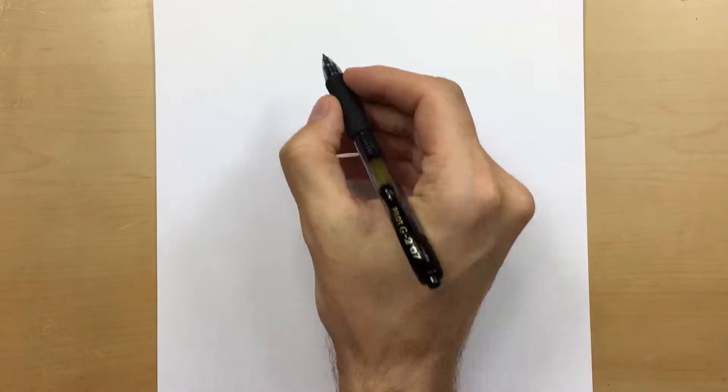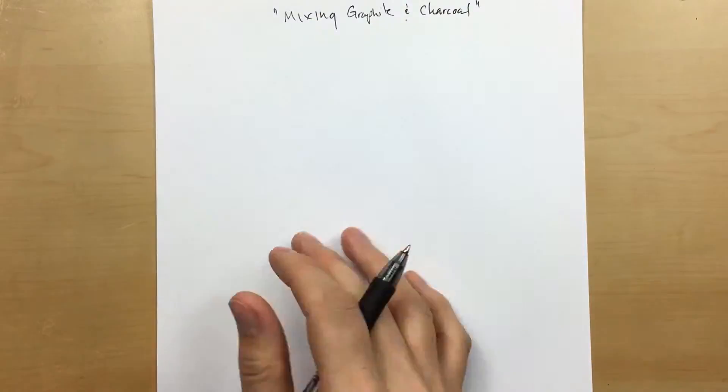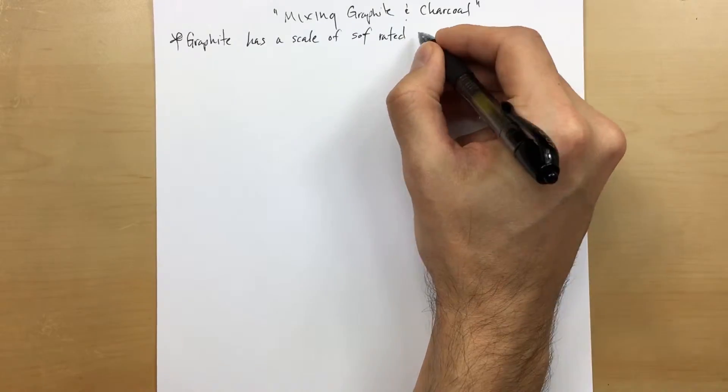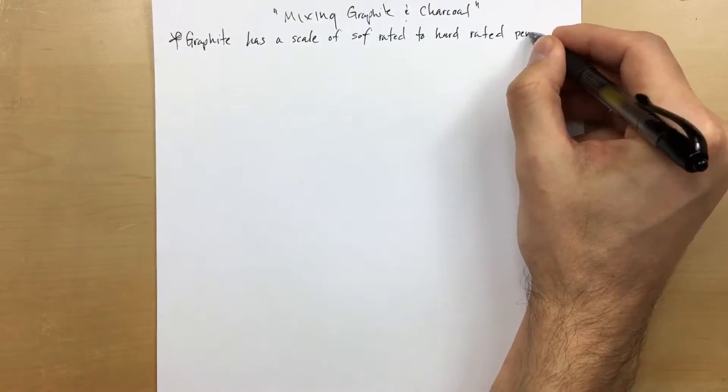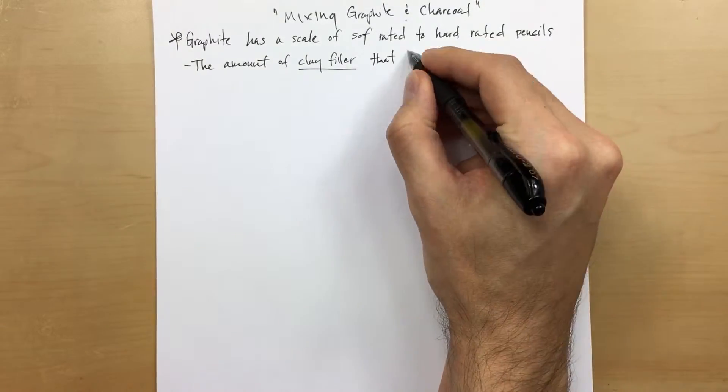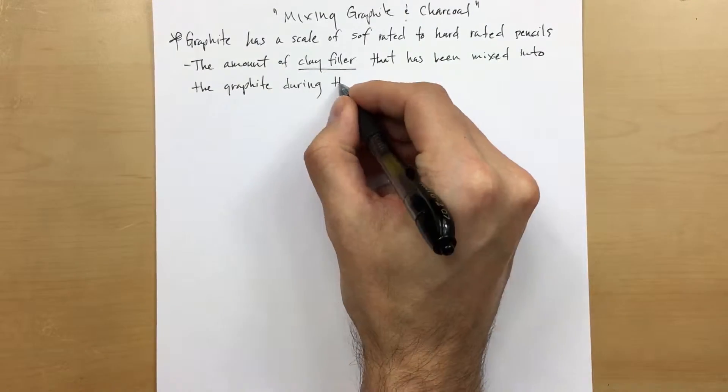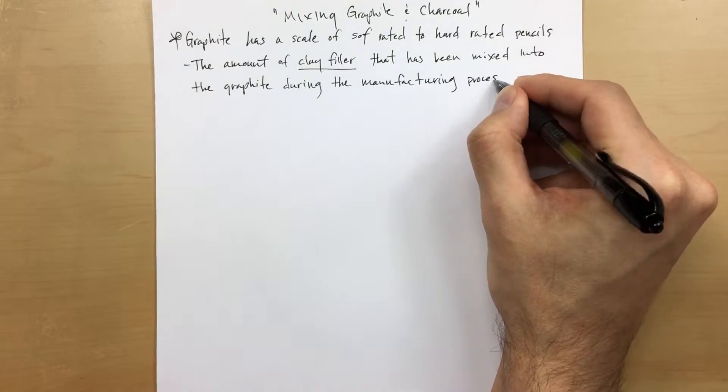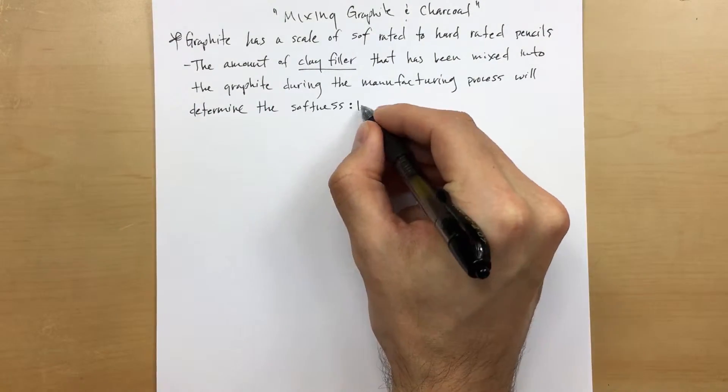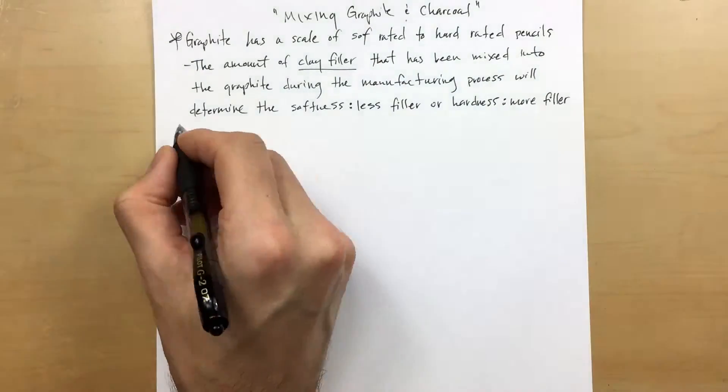Okay, so today's lesson is mixing graphite and charcoal together. Now it's important to note that graphite has a scale of soft rated to hard rated pencils and the reason why is because it's actually the amount of clay filler that has been mixed into the graphite during the manufacturing process. This will determine the softness or the hardness of your graphite, with the softer graphites having less filler and the harder graphites having more.